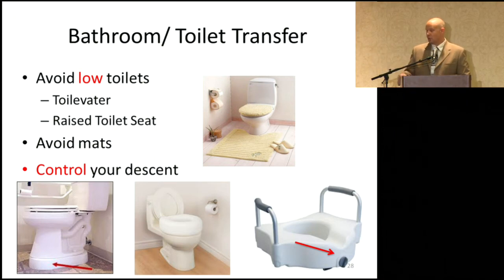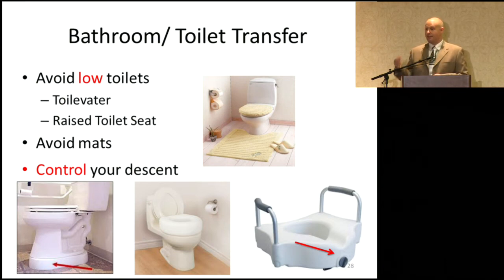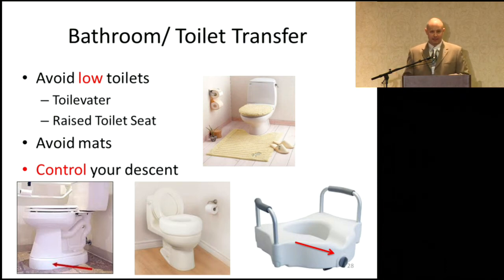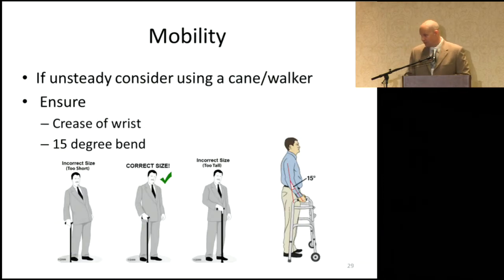We talked about scatter rugs — that applies in the bathroom too. A bath mat is good to absorb moisture and condensation around the toilet, which could be slippery, but realize that it is also a potential tripping hazard. Make sure you have double-sided tape on the bottom to keep it in place.